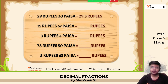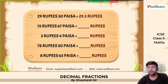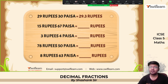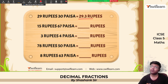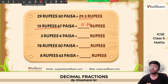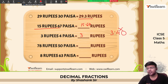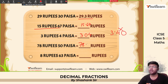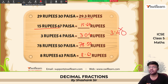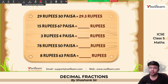35 paisa — correct, we have done it right. Now, 29 rupees 30 paisa can be written as 29.3. 15 rupees 67 paisa can be written as 15.67. Note: 3 rupees 4 paisa — students, writing 3.4 is wrong. If it was 3 rupees 40 paisa that would be right, but 3 rupees 04 paisa is 3.04. 78 rupees 50 paisa is written as 78.50. 8 rupees 63 paisa is 8.63.